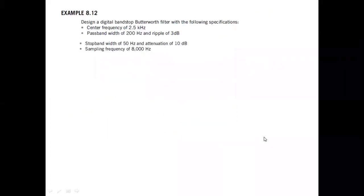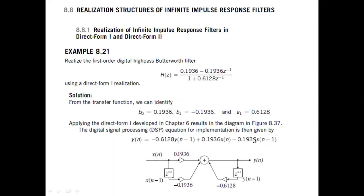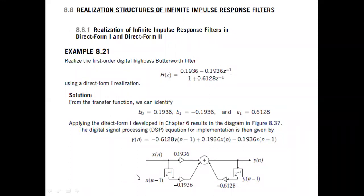There is also a numerical on band stop filter in the model question paper, but let us come to that later. There is a topic in the syllabus on realization of structure. The structures are: direct form one, direct form two, cascade structures, and parallel structures.